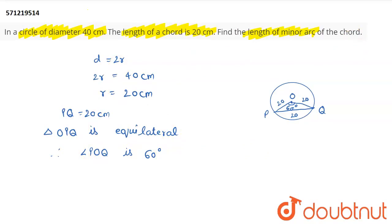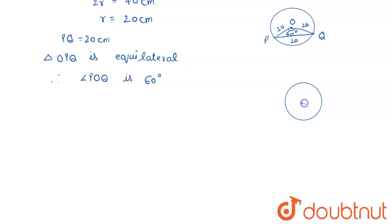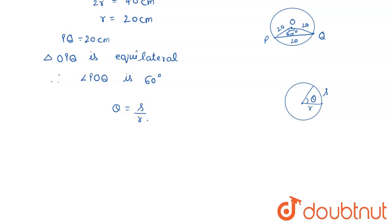Now we have to find the length of the minor arc. There is a relation between the angle subtended at the center and the length of the arc as well as the radius. For a circle with radius r, if the arc length is s and the central angle is theta, then theta in radians is defined as: theta equals length of arc divided by radius. Remember that theta must be in radians. We will use this relation to find the minor arc length.